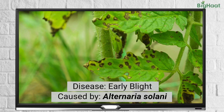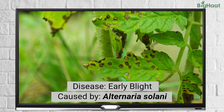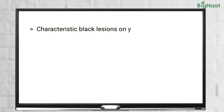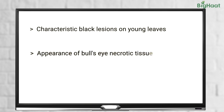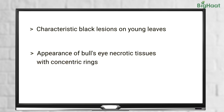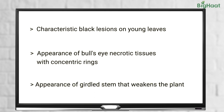Another common disease that can affect your tomato crops at this stage is early blight, caused by the fungus Alternaria solanii. This disease is characterized by small black lesions on young leaves. These lesions can develop into necrotic tissues during periods of high humidity and warm temperature. The affected leaves eventually drop and the stem becomes girdled, weakening the plant.